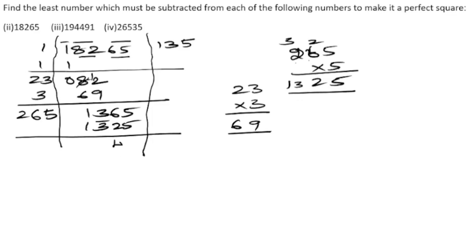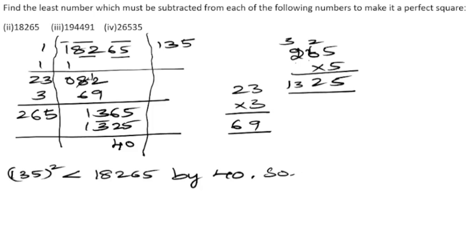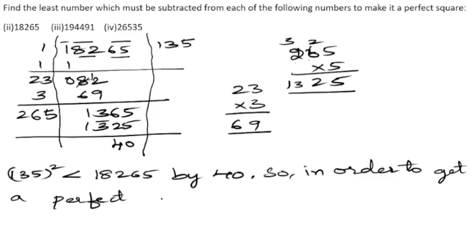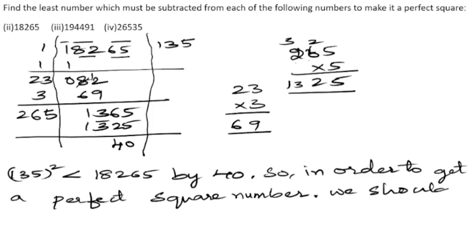The remainder is 40. So 135 squared is less than 18265 by 40. Therefore, in order to get a perfect square number, we need to subtract 40 from 18265.